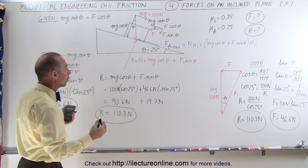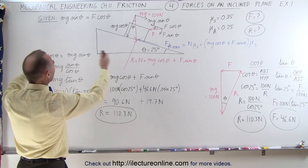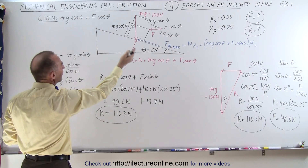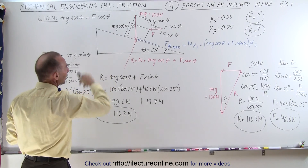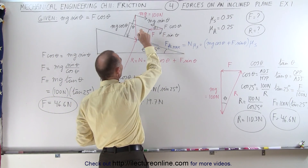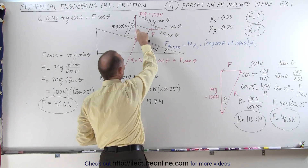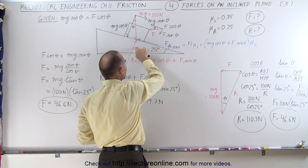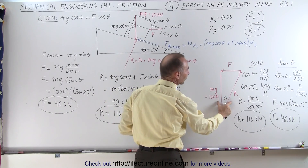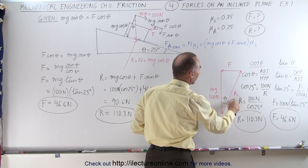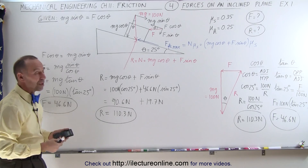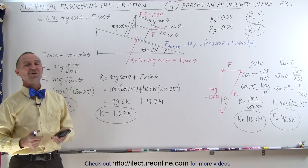So here is the key takeaway: you can solve this in the traditional sense by dividing each force into parallel and perpendicular components relative to the surface. However, if you draw a triangle using the three forces — the applied force, the weight, and the reaction force — and you know the angle theta, you can very easily solve for R and F using cosine and tangent. Either way you get the same answer, but you may find one method easier than the other.